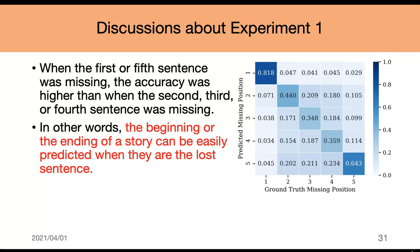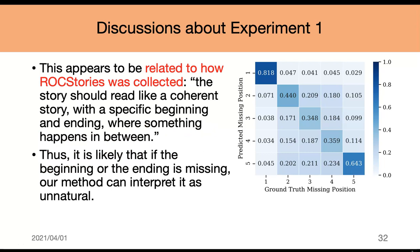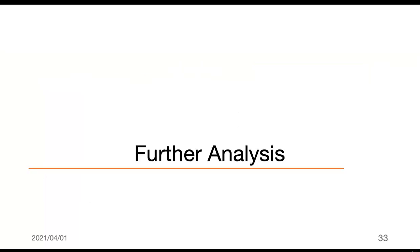The heatmaps show the accuracy for each position. The performance is lower when k equals 2, 3, or 4 than when k equals 1 or 5. When the first or fifth sentence was missing, the accuracy was higher than when the second, third, or fourth sentence was missing. In other words, the beginning or the ending of a story can be more easily predicted from the remaining sentences. This appears to be related to how a story is structured — a story should be a coherent narrative with a specific beginning and ending where something happens in between. Thus, it is likely that when either the beginning or the ending is missing, our method can interpret the story as unnatural.